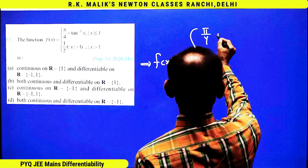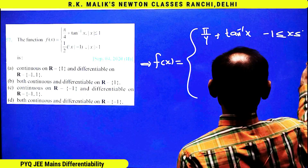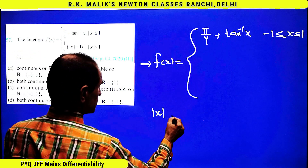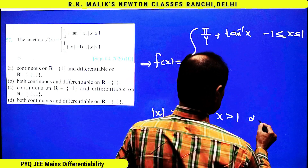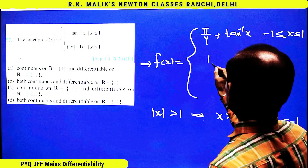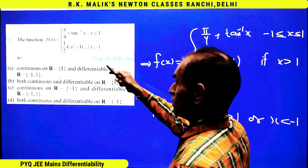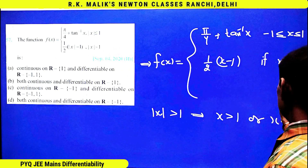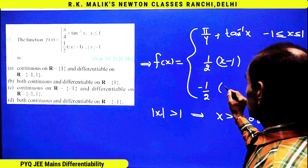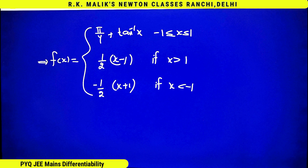This implies f(x) equals π/4 plus tan⁻¹(x) where x lies between minus one and one. You should know that |x| > 1 means x > 1 or x < -1. Therefore this can be written as (1/2)(x - 1) if x is greater than one, because when x is positive, |x| can be written as x. And if x is less than minus one, |x| becomes minus x, so the expression becomes (-1/2)(x + 1).